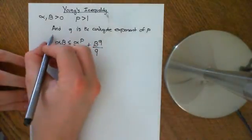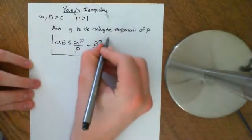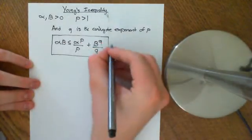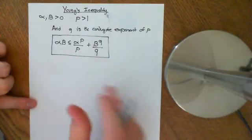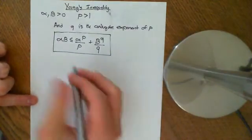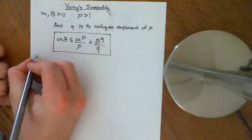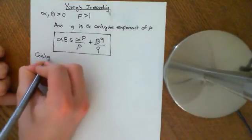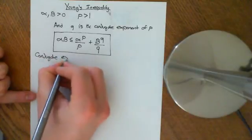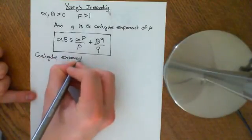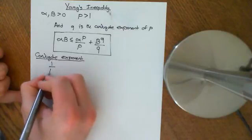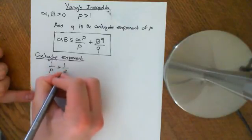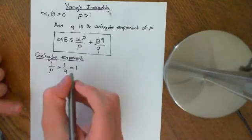So that is Young's inequality. Now let's explain what the concept of conjugate exponent means. If q is the conjugate exponent of p, it means that 1 divided by p plus 1 divided by q is equal to 1.